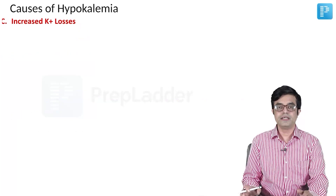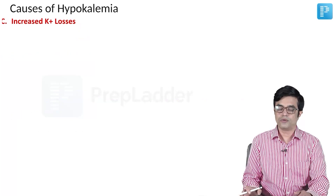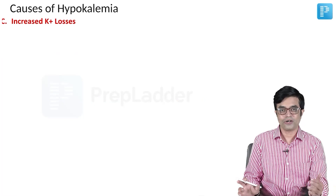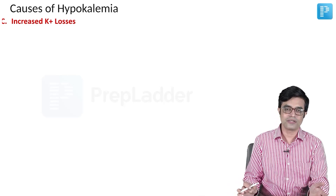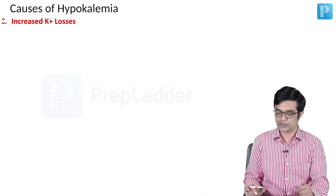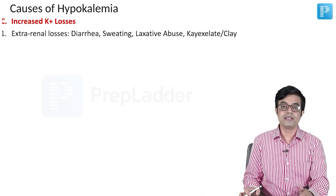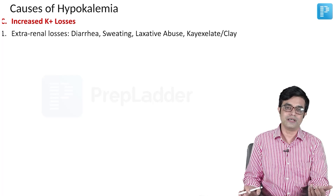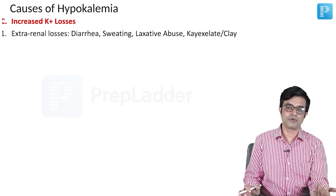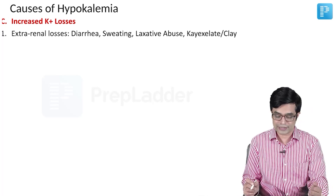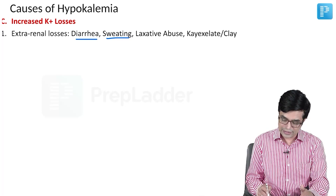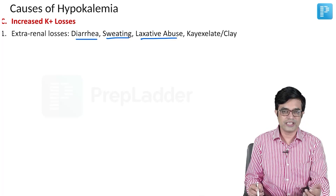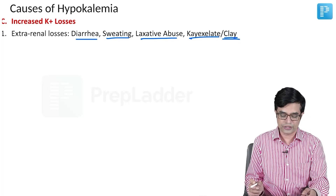The third category is increased potassium losses. Potassium loss can occur either outside the kidney or from the kidney itself — extra-renal causes and renal losses. Extra-renal means urine is not excreting extra potassium; it is being lost somewhere else. This can occur in patients with diarrhea, sweating, laxative abuse, or ingestion of K-exalate or clay.